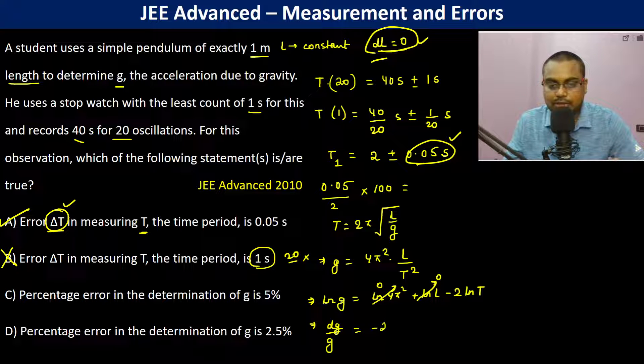So minus 2 ln(T), minus 2 into δT/T, and because it is error, it is going to be positive.